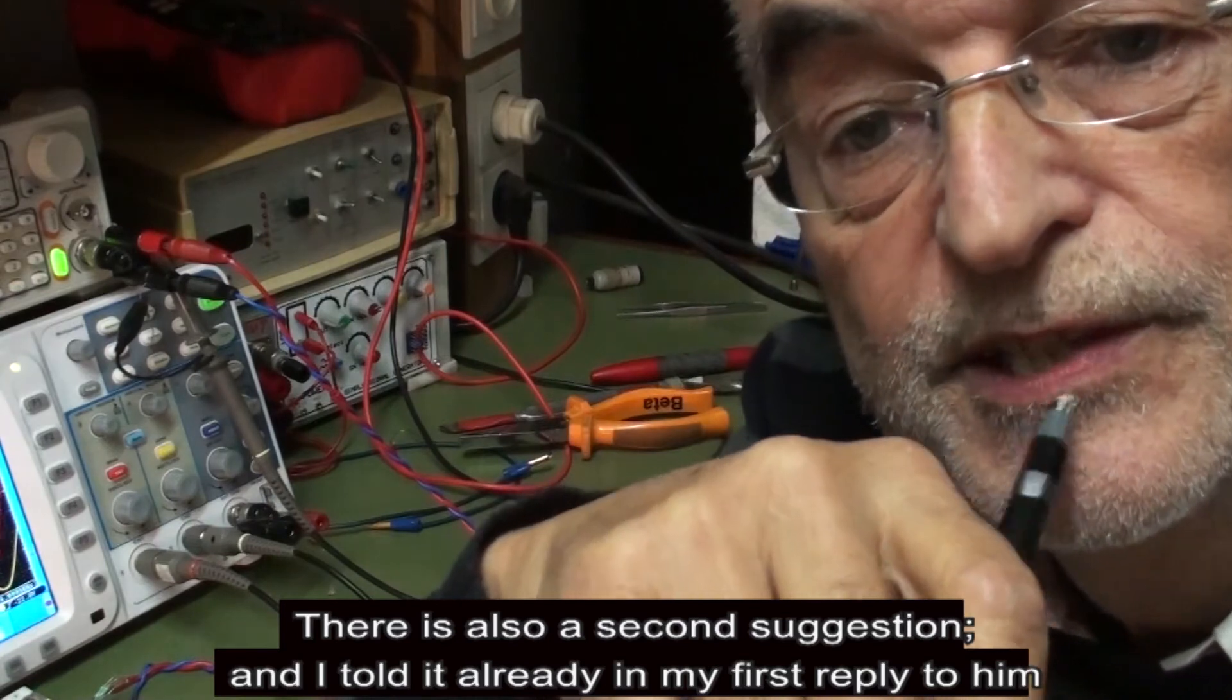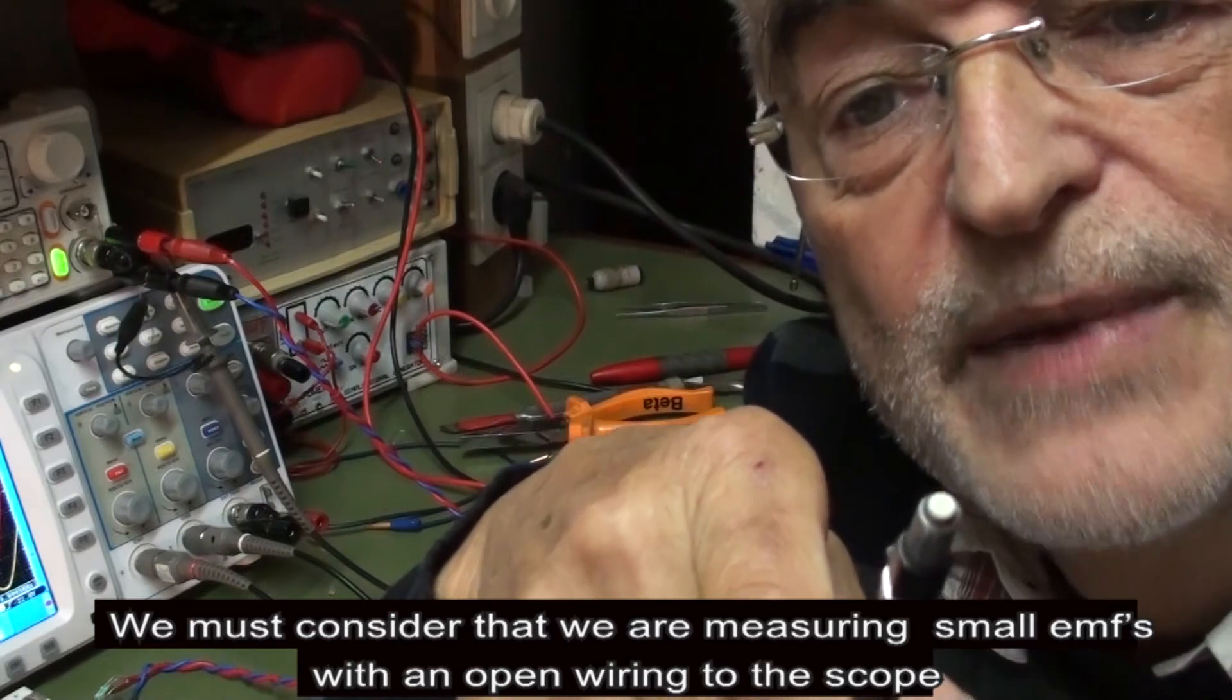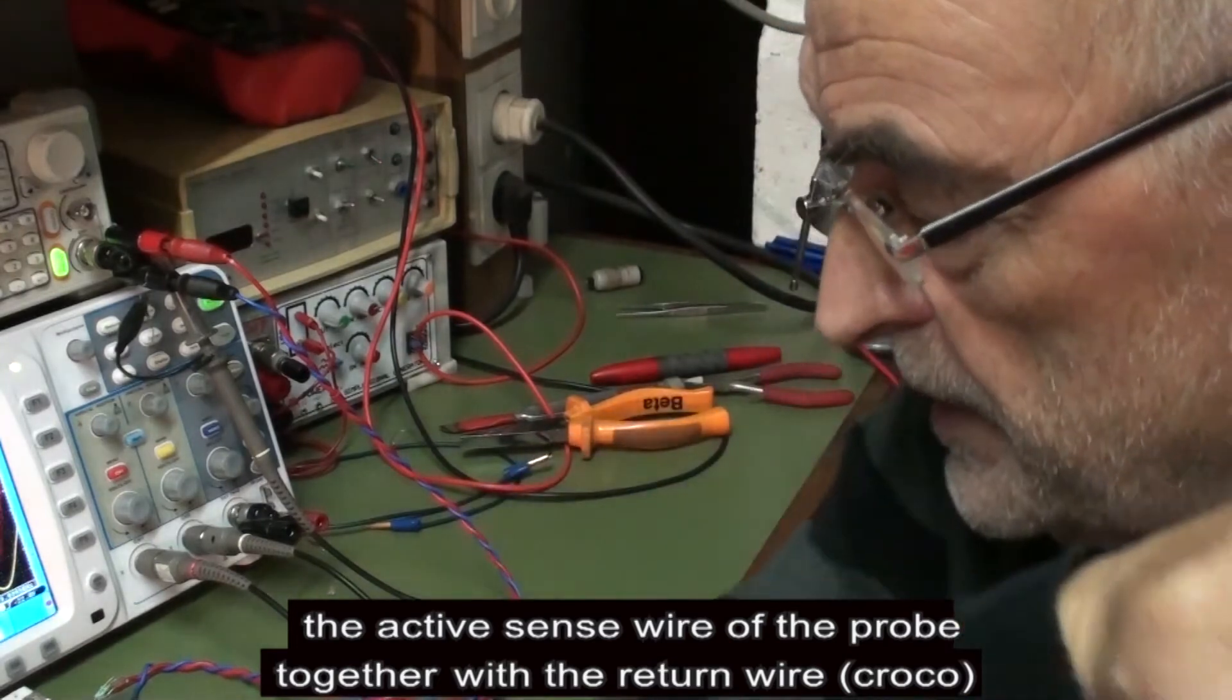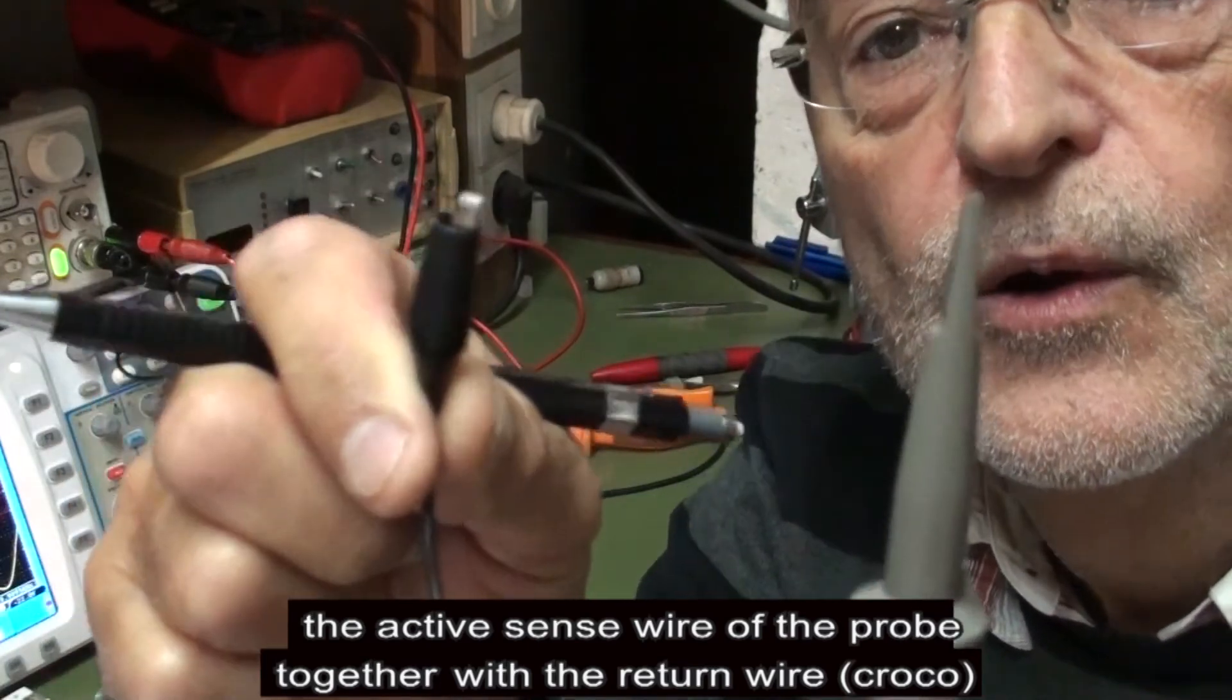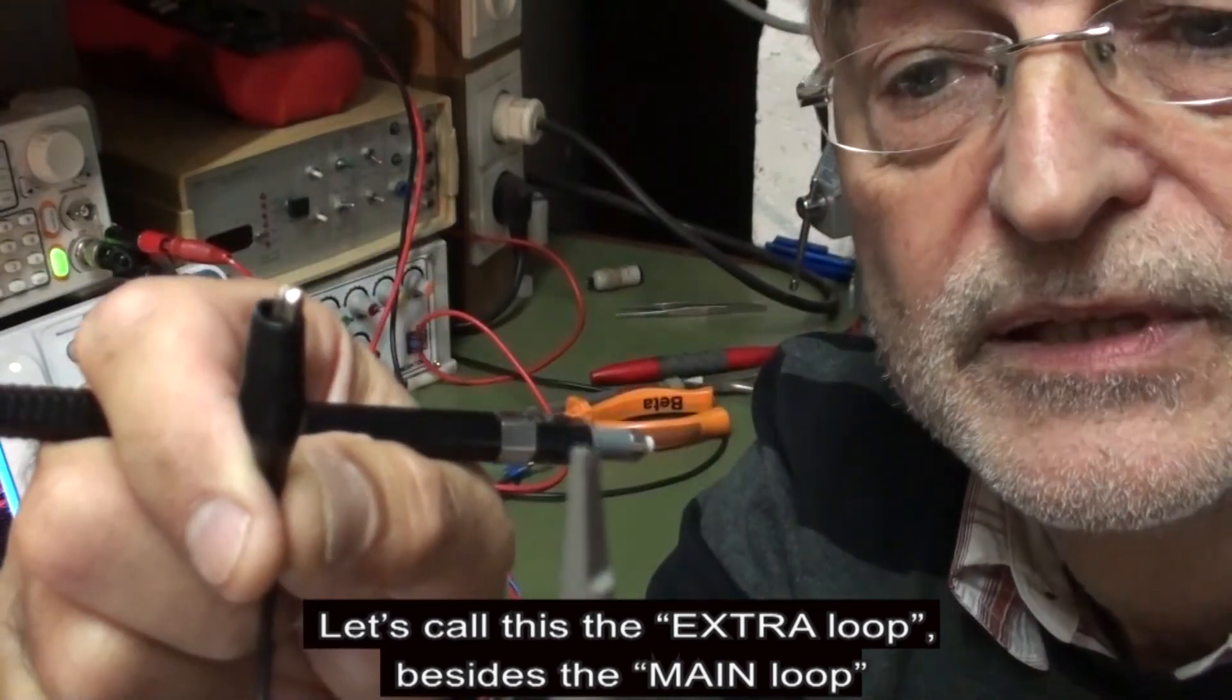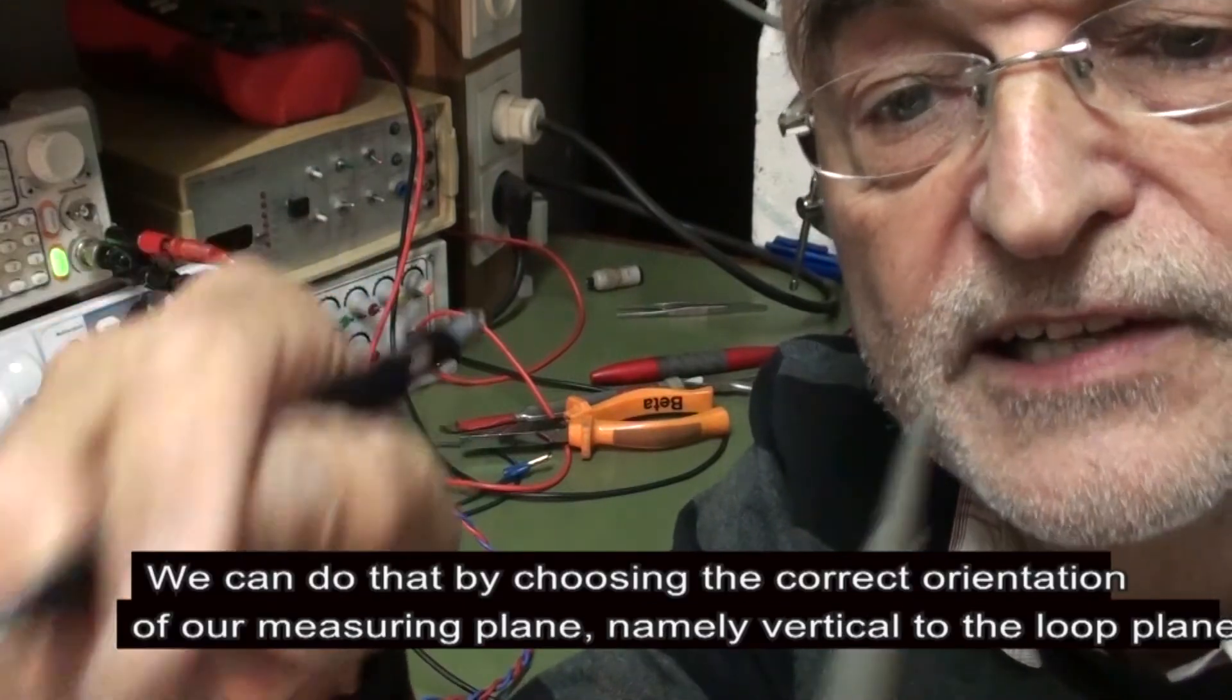There is also a second suggestion, and I told it already in my first reply to him. We must consider that we are measuring small EMFs with open wiring to the oscilloscope, and this means there is not a magnetic shield around the wires. The active sense wire of the probe together with the return wire, the crocodile, they are forming an additional loop with half the length of the main loop. So let's call this the extra loop besides the main loop. And indeed, this loop is unwanted. It should be avoided.